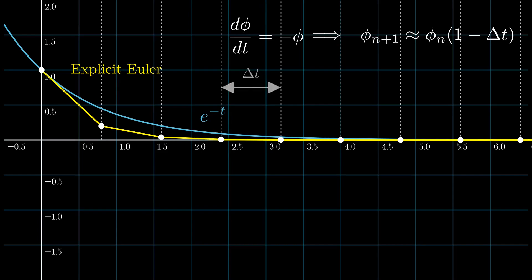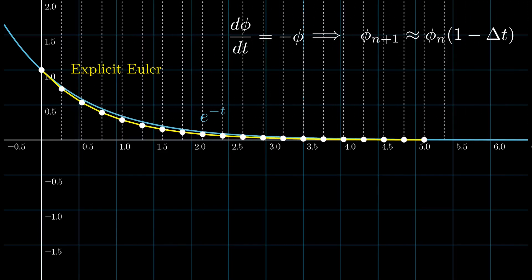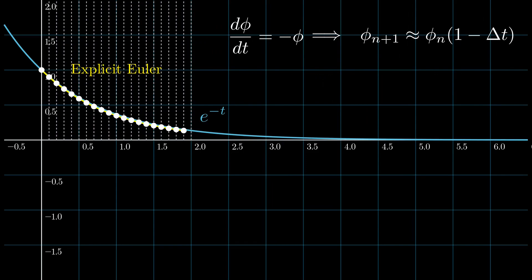To improve the accuracy, we could reduce delta t, maybe to 0.1. Now the graph is really accurate. But there's a problem: to work out the value of phi at, say, time equals 2, we need many more time steps than before. This means many more calculations need to be done, so it takes longer to calculate. There's this trade-off between accuracy and speed.